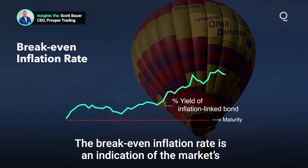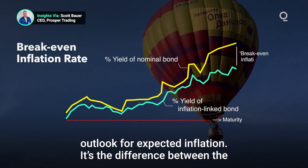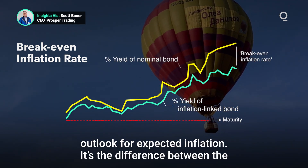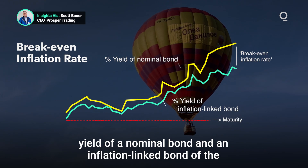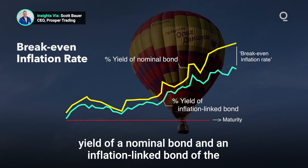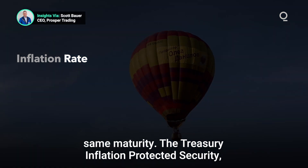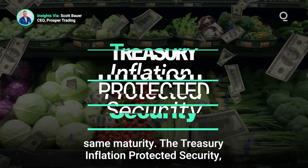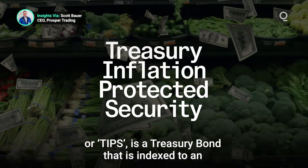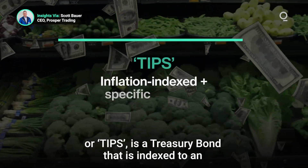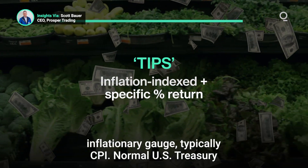The break-even inflation rate is an indication of the market's outlook for expected inflation. It's the difference between the yield of a nominal bond and an inflation-linked bond of the same maturity. The Treasury Inflation Protected Security, or TIPS, is a treasury bond that is indexed to an inflationary gauge, typically CPI.